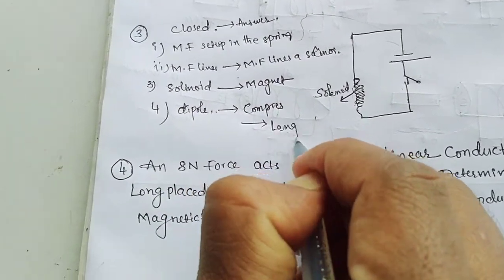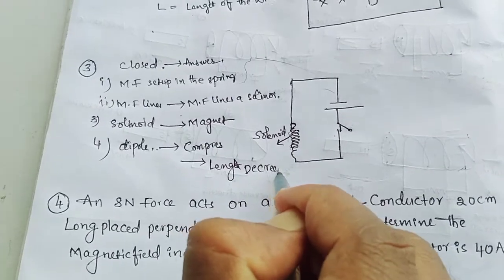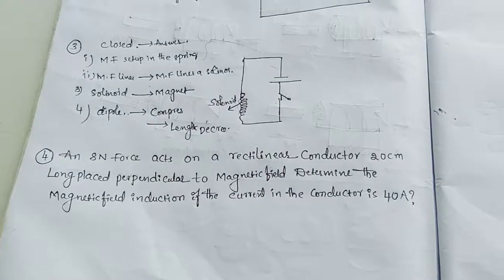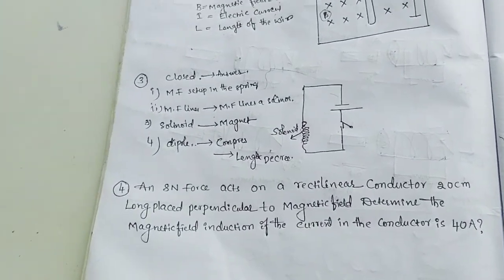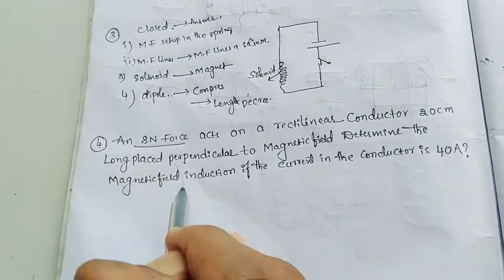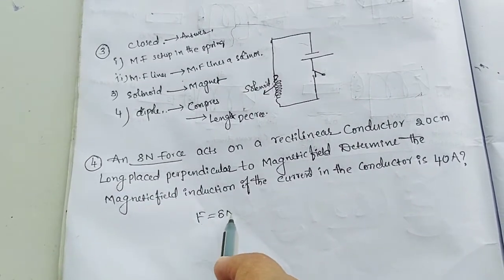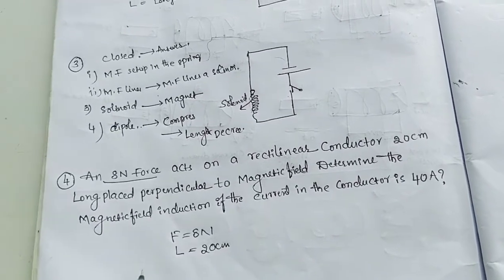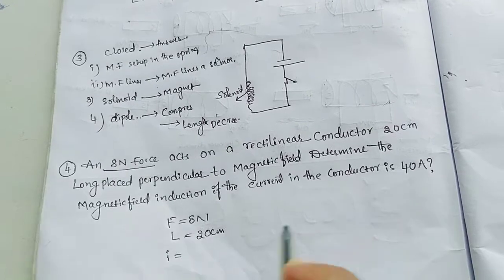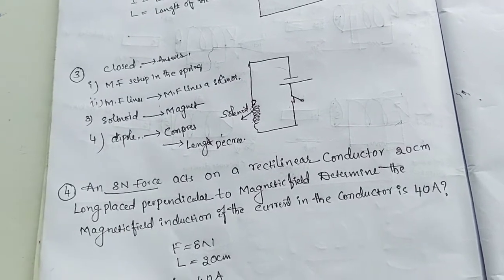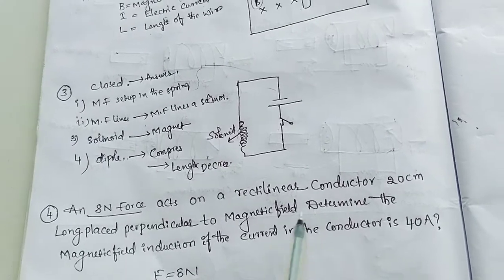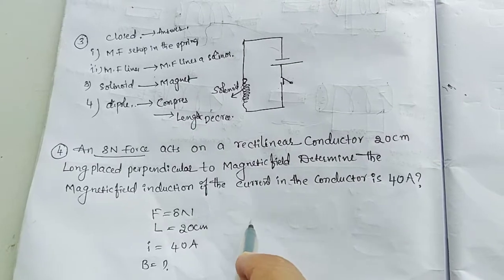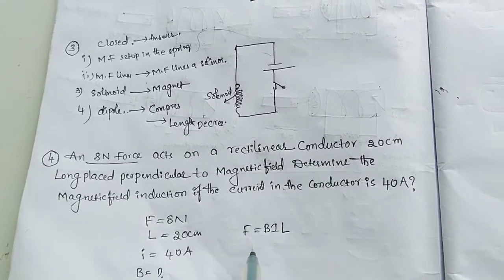Now the fourth concept: a very important numerical problem from an examination point of view. Force F is equal to 8 Newtons is given, L is equal to 20 centimeters is given, and I is equal to 40 amperes is given. We are finding the magnetic induction B. Using the formula F is equal to BIL, we rearrange to get B is equal to F divided by IL.